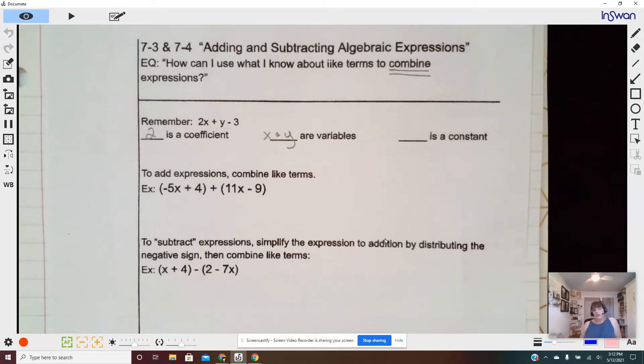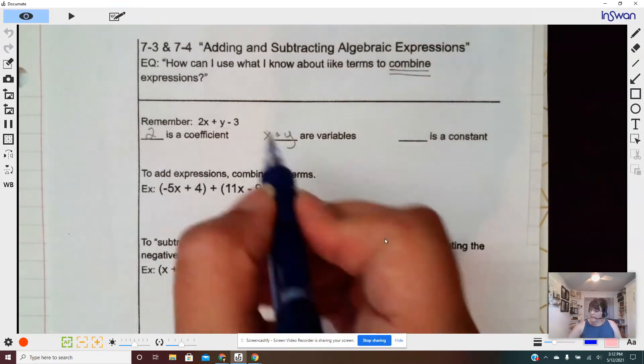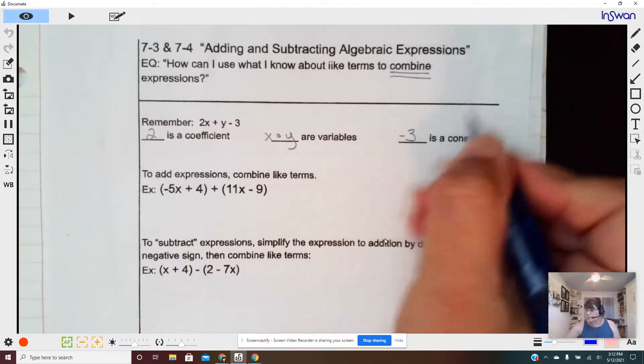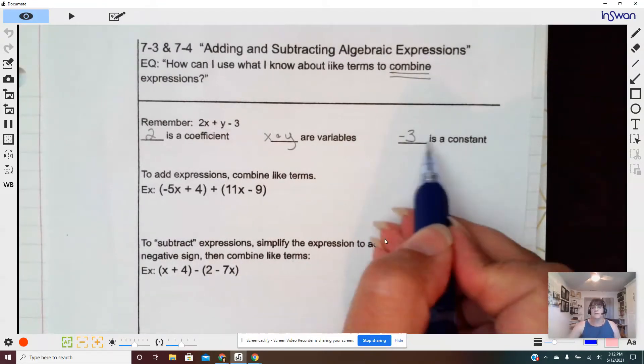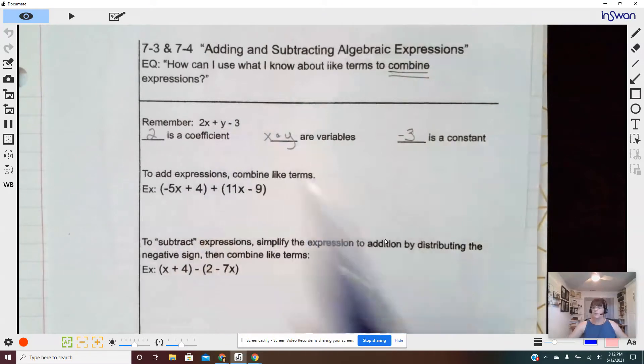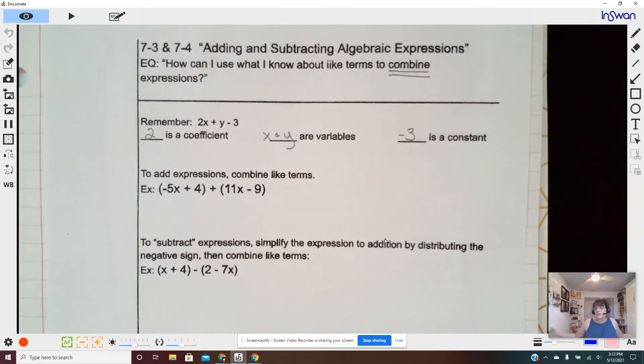And once we start solving equations, our goal is going to be, can we find the value of that variable in that situation? And then negative three is a constant. It has no variable with it. It's just a number. And negative three is negative three is negative three all day long. I can't change it. So it's a constant. That's the difference between varying and being consistent.